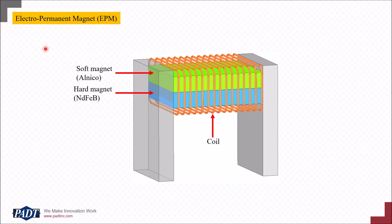In this video I'm going to demonstrate how to simulate an electropermanent magnet using ANSYS Maxwell. Usually in an EPM there will be two magnets: one is a soft magnet which will be easy to demagnetize and magnetize, and the other is a hard magnet which will be difficult to demagnetize. There will be some coils around these two magnets, and current will flow into these coils. There will also be two magnetic plates connected to these magnets.